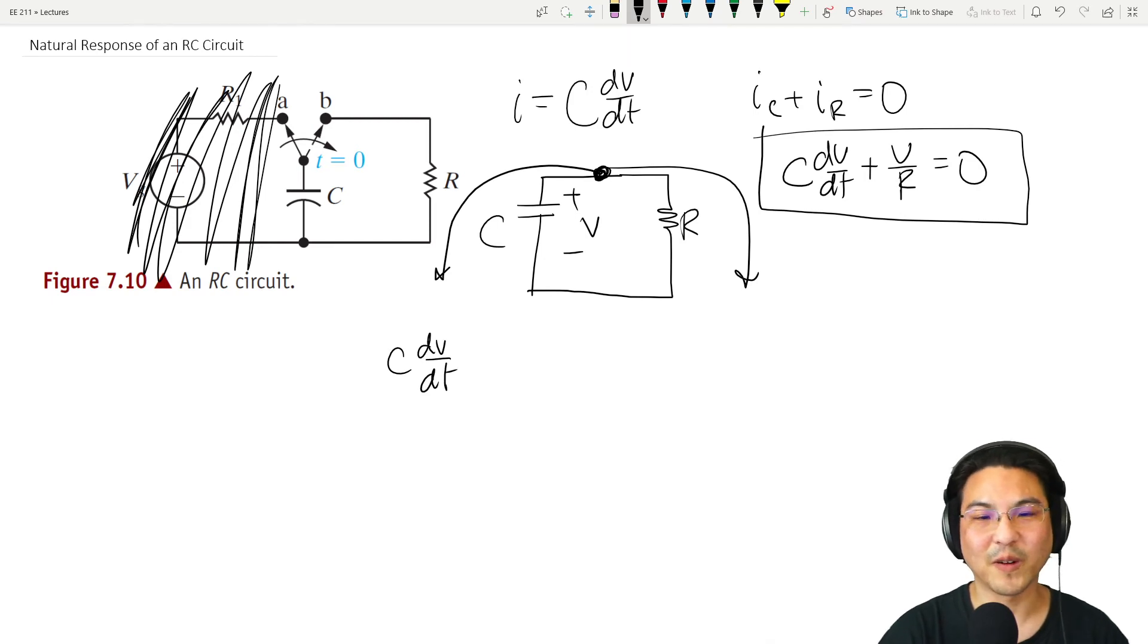Let me move V over R on the other side. And then how about let's move C over here. Now let's do separation of variables. Let's exchange these two, so then we have dV over V, and on this side...